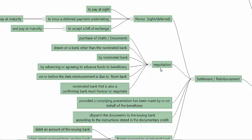Negotiation means purchase of a draft or documents — it can be draft and documents, or documents alone. Drafts are normally drawn on a bank other than the nominated bank — on the confirming bank if confirmed, or on the issuing bank if not confirmed. The nominated bank purchases these drafts. In case of a sight transaction, the nominated bank claiming reimbursement will have a few days to receive it. In case of a 30-day or 90-day usance transaction, before the 30th or 90th day, if the nominated negotiating bank agrees to advance funds or purchases the drafts, negotiation has taken place.